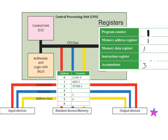'Add 5' gets transferred to the instruction register. We now know we need to add whatever is in memory location five to our accumulator, which we established earlier holds the number three. We go back along the address bus to find what's in address number five — we know it's the number six. Number six is transferred along the data bus and added to what is already in the accumulator from the last fetch-decode-execute cycle, which is three.